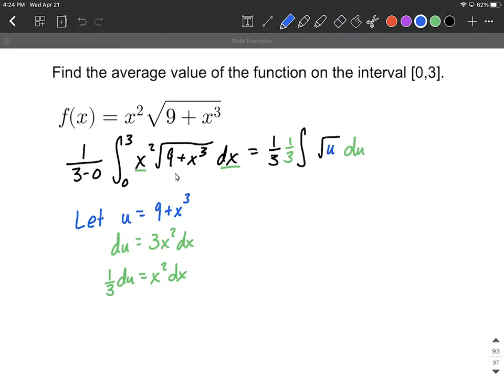But our bounds they're going to change as well, because initially these were x values for 0 and 3, we need to switch these over to u values. We're going to use our let statement where u equals 9 plus x cubed and we're going to fill in each one of these. So we get 9 plus 3 cubed, which will be 9 plus 27, which works out to be 36 for a u value. And then we're also going to plug in 0. So substitute it into our let statement and we get 9 plus 0 cubed, which will be 9 plus 0, which works out to be 9. So our lower bound is going to be 9.